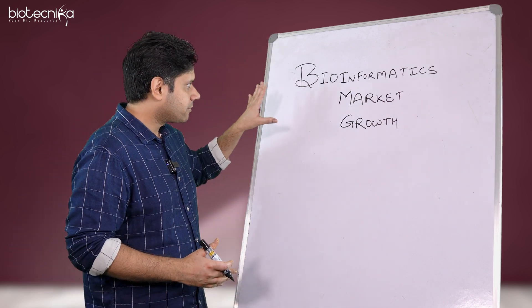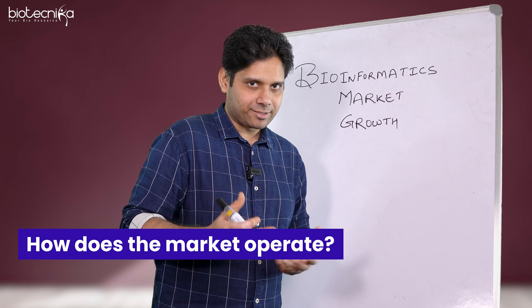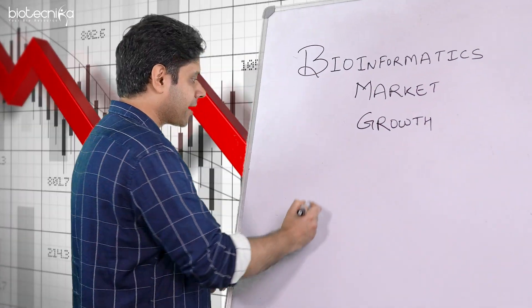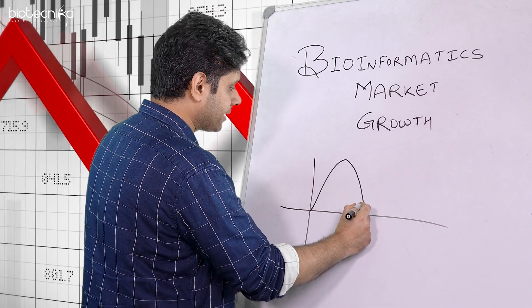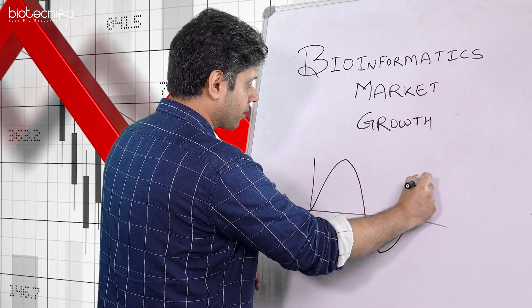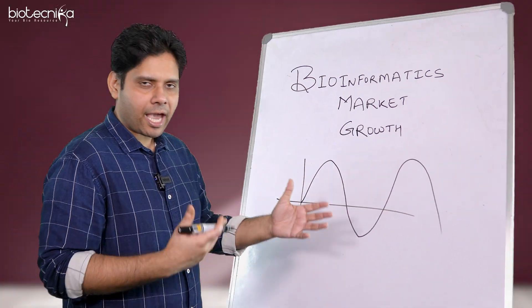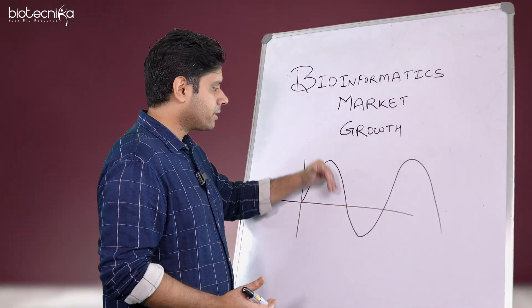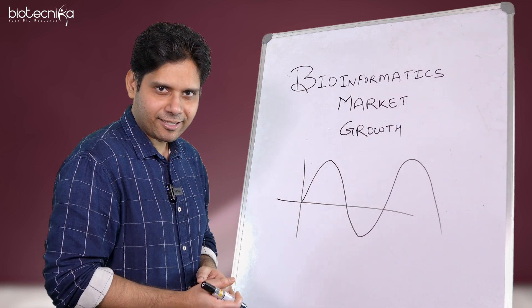Now to start with, first let us understand how generally a market operates. So generally a market operates in cycles. So let us say that it will go for a boom, and then it will go for a negative, then it will go for a boom. This is how the cycle goes. Just like the share market or any market, it will always have a boom and then it comes down, or rather we would say is a consolidation phase.